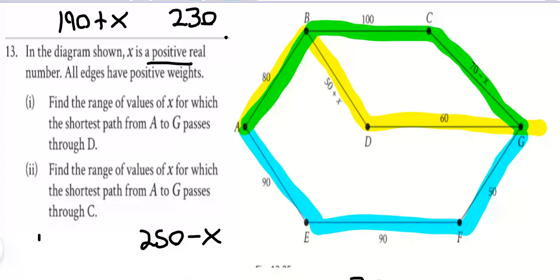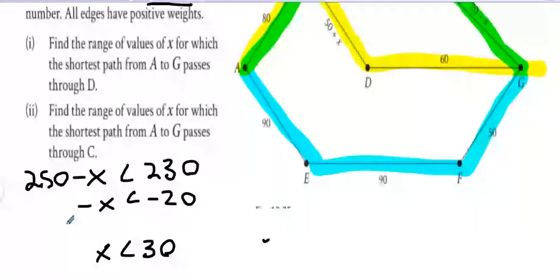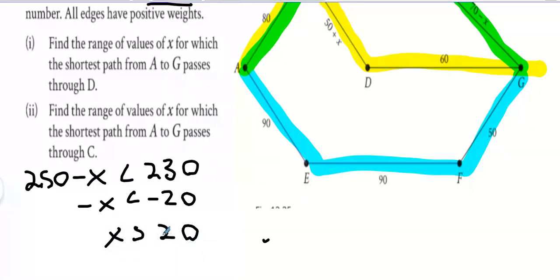What we're going to do is 250 take away x less than 230 to begin. That means minus x less than minus 20. Therefore, multiply both sides by minus 1, you've got x bigger than 20 for a start. Not the final answer, but just as a start.